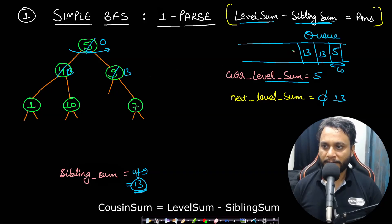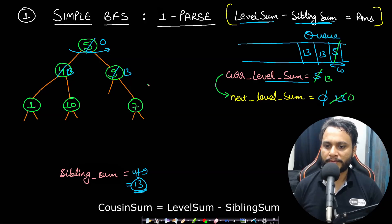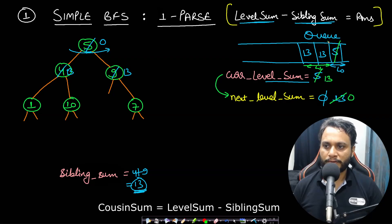Level 0 parsing is done — 5 was popped out. Before going to the next level, current level sum becomes next level sum which is 13, and next level sum is reassigned to 0. We find the size of the queue for level 1, which is 2, and will process those two nodes one by one.